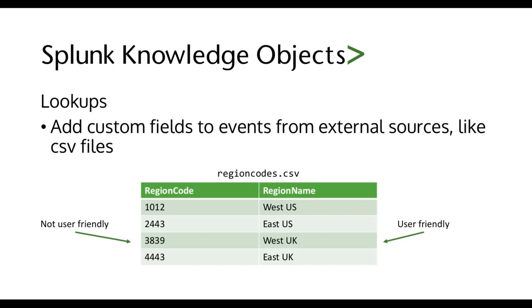In one column you put the not user-friendly region codes, and in another column you put the region name that you want Splunk to replace it with, and then you do a lookup in your Splunk search. Stay with us because in the next video we're going to actually do a demo of lookups.